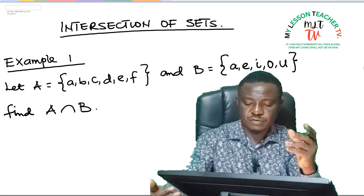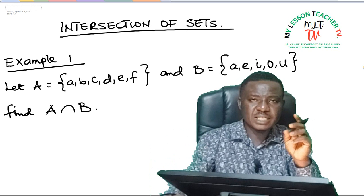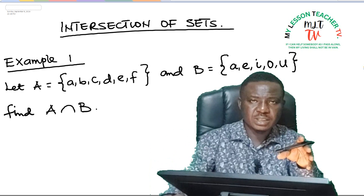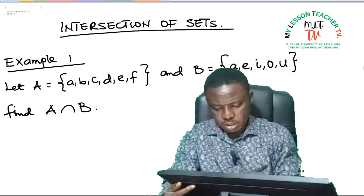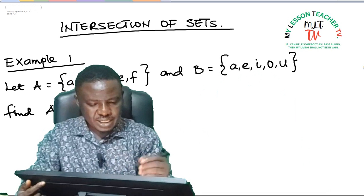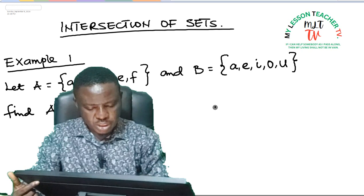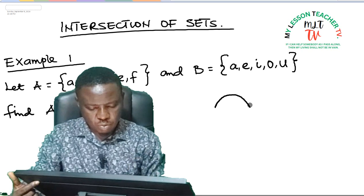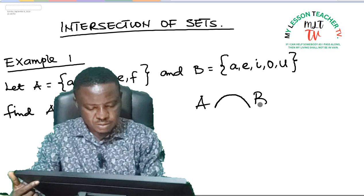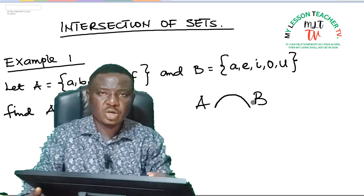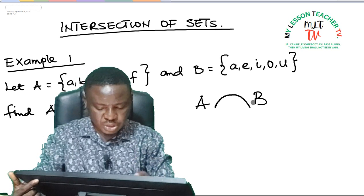The intersection of sets simply means those elements you find in A and B—that is, elements that are common to both sets. So if you are asked to find the intersection of two sets, intersection in sets can be denoted using this symbol. Whenever you see this symbol, it means the intersection of two sets. For example, A intersection B.